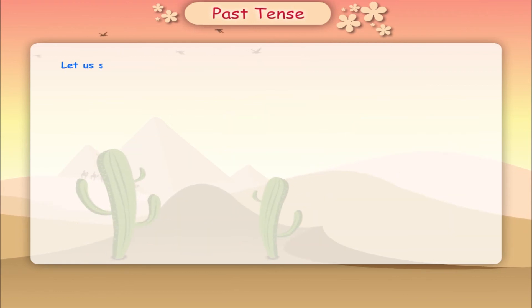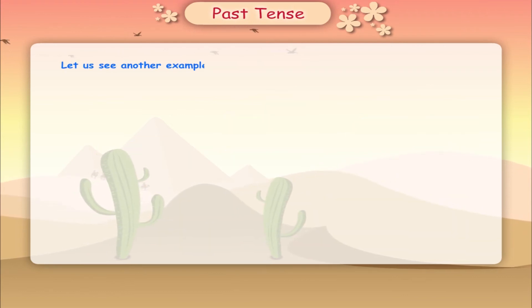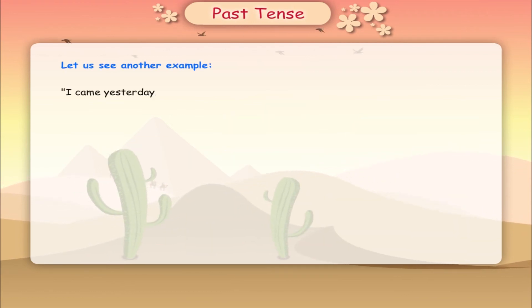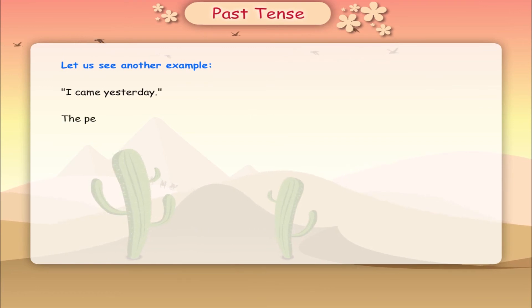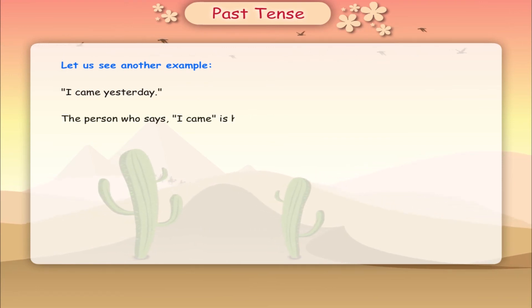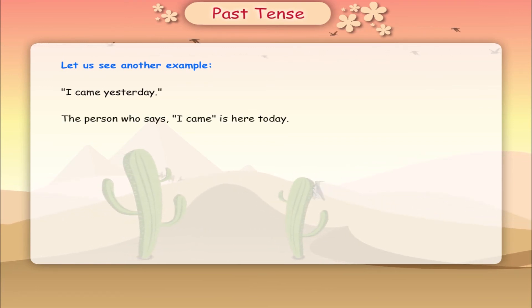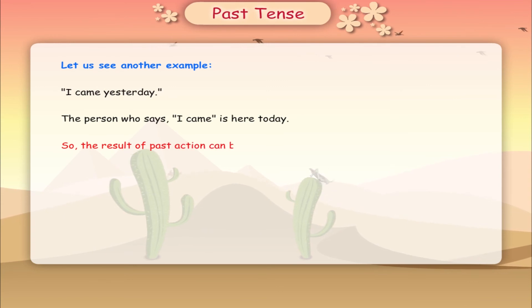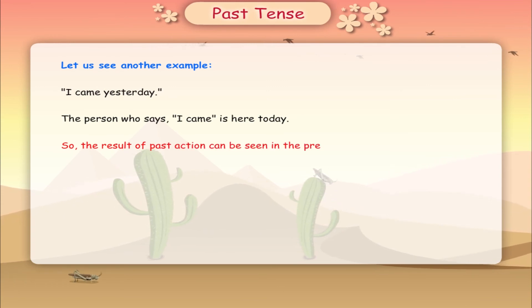Let us see another example. I came yesterday. The person who says 'I came' is here today. So the result of the past action can be seen in the present.